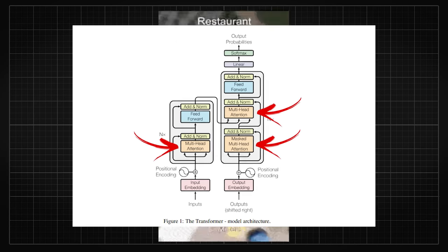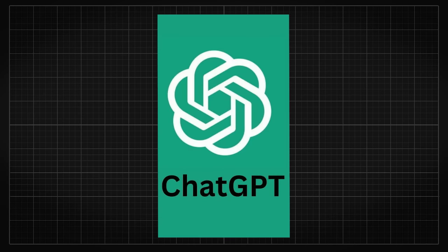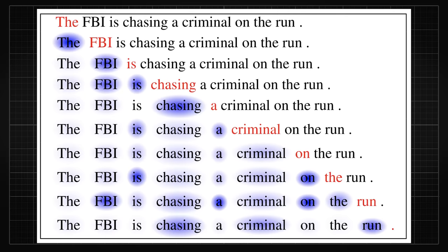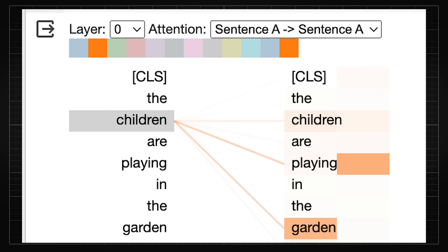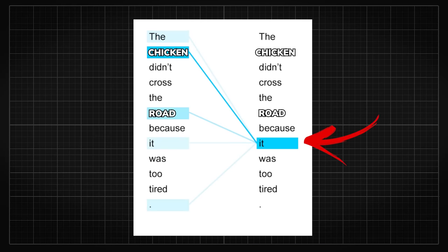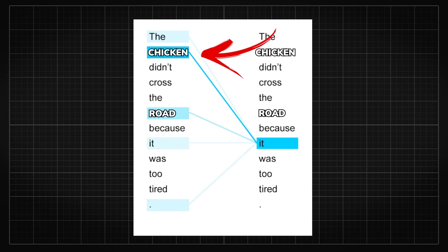More specifically, the attention mechanism within large language models that powers AI chatbots is actually super useful. For language modeling, we used the attention mechanism in the first place because it let the model attend to multiple locations when generating a word. This is important as it can encode information about the relations between words. For example, the word 'it' within the sentence 'the chicken didn't cross the road because it was too tired' is obviously referring to the chicken.